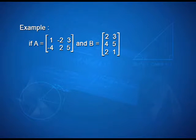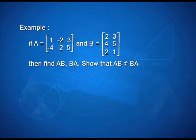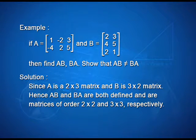Now let us discuss the non-commutativity of multiplication of matrices. We shall see by an example that even if products AB and BA are both defined, it is not necessary that AB equals BA. If A equals [1, minus 2, 3; minus 4, 2, 5] and matrix B has elements [2, 3; 4, 5; 2, 1], then find products AB and BA, and show that AB is not equal to BA. Since A is a 2 by 3 matrix and B is a 3 by 2 matrix, products AB and BA are both defined and are matrices of order 2 by 2 and 3 by 3 respectively.